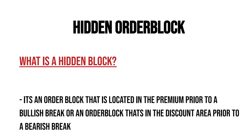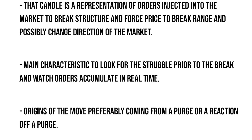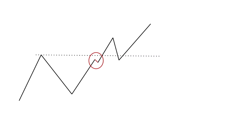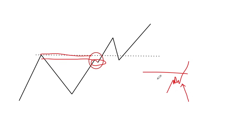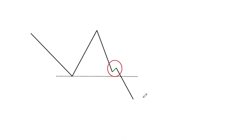A hidden order block is an order block located in the premium prior to a bullish break, or located in the discount area prior to a bearish break. That candle represents orders injected into the market to break structure and potentially change direction. The main characteristics to look for are struggle prior to the break of structure and watching orders accumulate in real time. The origins of the move preferably come from a purge or a reaction of a purge.